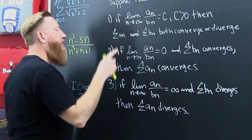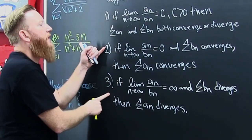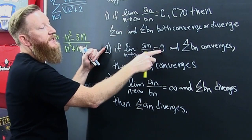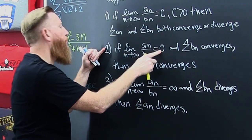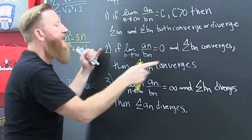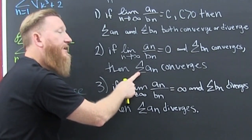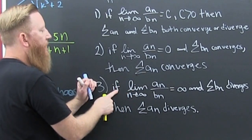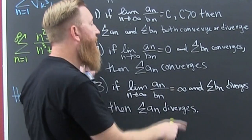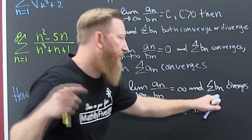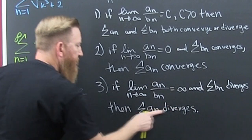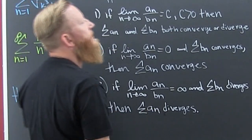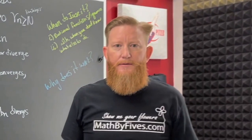I'll divulge into these two special cases — we'll talk about their relevance in a moment. If the limit of the quotient is zero and b_n converges, then a_n also converges. That's the comparison test. And if the limit of the quotient of those goes to infinity and b_n, the dominant one, diverges, then the a_n series diverges.